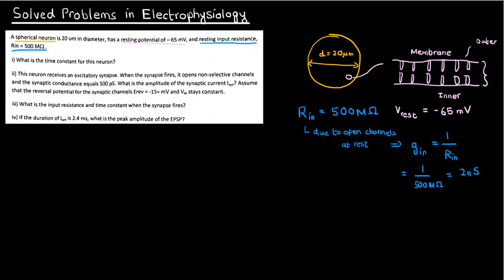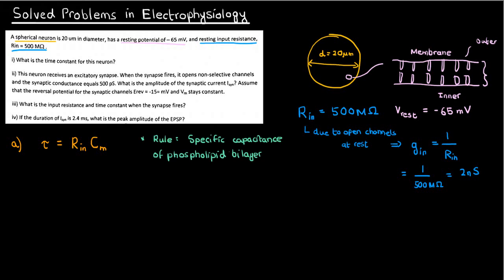So let's get started on the actual problem. The first part asks you to find the time constant of the neuron. It's just the time constant of a resistor-capacitor circuit — the resistance of the membrane at rest, which is just the input resistance, times the capacitance of the membrane C sub n. We already know the input resistance, but we don't know the membrane capacitance. However, you just have to recall one special rule you should memorize: the specific capacitance — the capacitance of a one centimeter squared patch of membrane — is one microfarad. This is a known and constant property of the phospholipid bilayer that makes up the cell membrane.